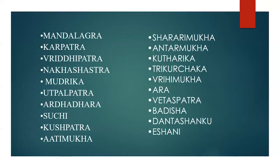The 20 types of Shastras are: Mandalagra, Karpatra, Vriddhipatra, Nakshastra, Mudrika, Utpalpatra, Ardhadhar, Suchi, Kushpatra, Atimukha, Shararimukha, Antarmukha, Kutharika, Trikurchak, Vrihimukha, Ara, Vetaspatra, Vadish, Dantashanku, and Eshani.